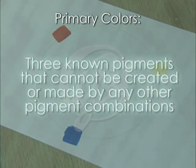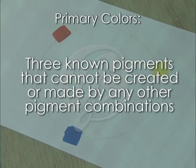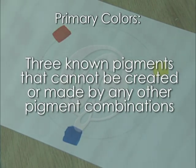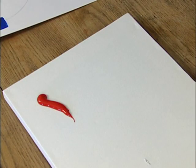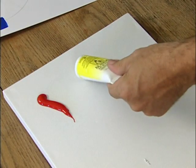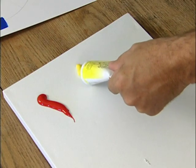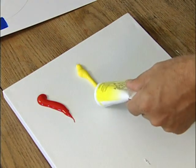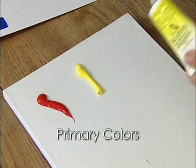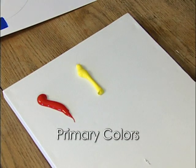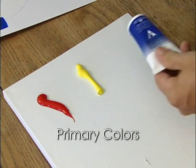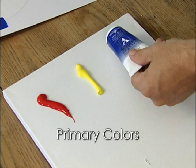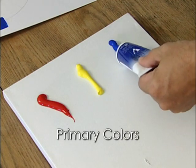Primary colors are three known pigments that cannot be created or made by any other pigment combinations. Simply labeled, the three primary colors are red, yellow, and blue, and are sometimes referred to as R-Y-B.